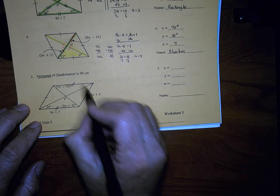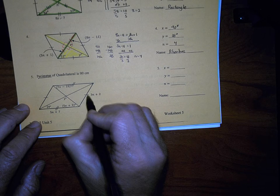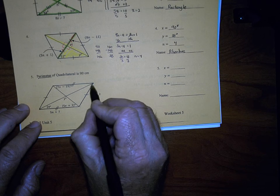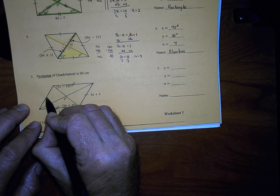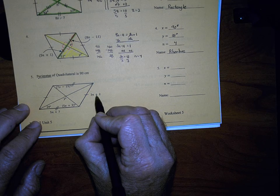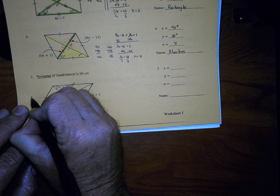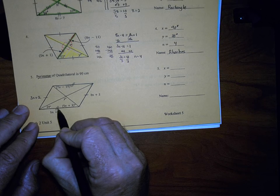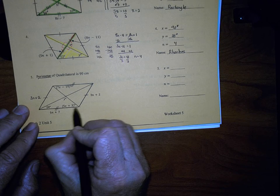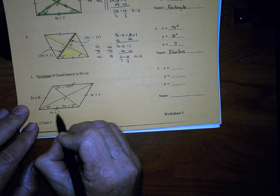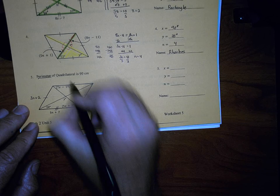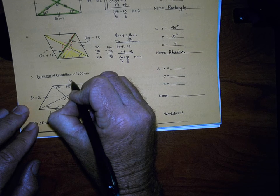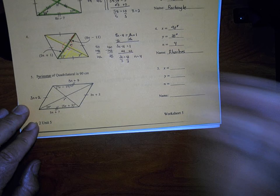What you should notice is that the right side is marked congruent to the left side, and the right side is marked as 3N plus 2. So that means the left side we could mark as 3N plus 2. And the same goes for the bottom. The bottom side is marked as 5N plus 7, and it's marked as congruent to the top side. So the top side is 5N plus 7 as well.